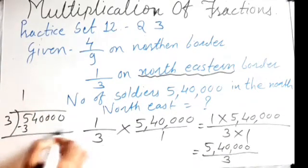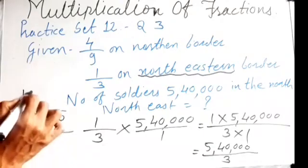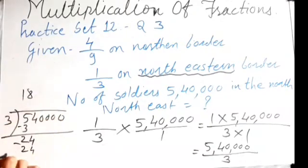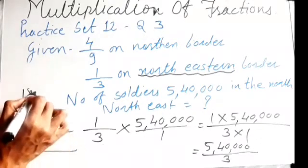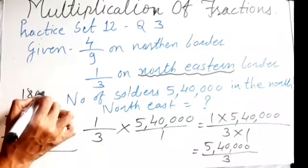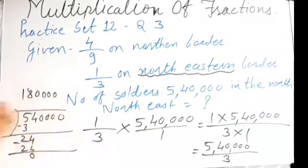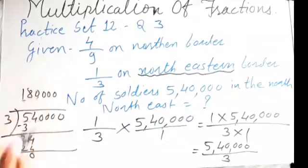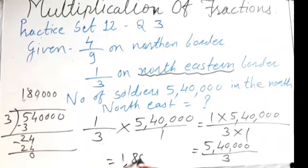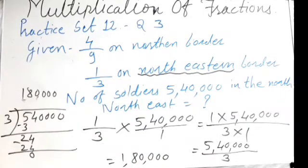Now divide five lakh forty thousand by three: three ones are three, three eights are twenty-four — working through the digits. The answer comes to one lakh eighty thousand. So our answer is one lakh eighty thousand soldiers posted in the northeast.